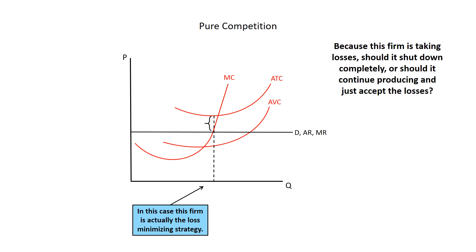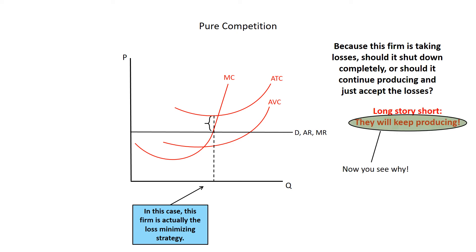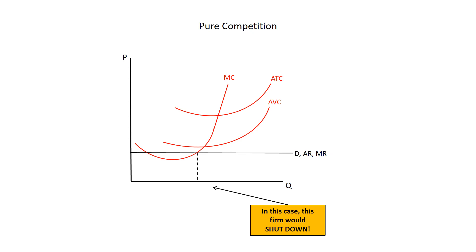Because this firm represented by the graph is taking losses, should it shut down completely or continue producing and accept the losses? Obviously it should accept the losses, because average revenue is greater than average variable cost — shutting down would cause the losses to be greater. Producing at the point where marginal revenue equals marginal cost, the losses are minimized. This firm would realize these losses were temporary and hold on until fixed cost obligations of other firms expired. When that happens, those firms would exit, and with fewer firms producing, the product price would rise along with the demand curve. If the price fell to the shutdown point where revenue no longer covers variable cost, however, the firm would shut down.